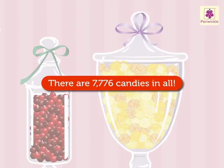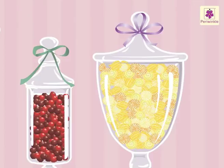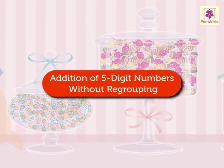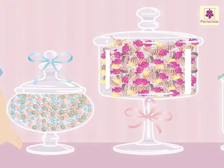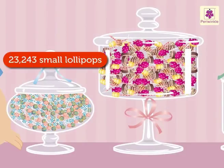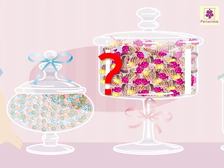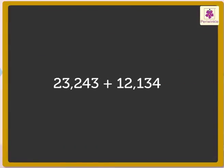Wow! So many yummy candies to eat. Hey, look at those lollipops — they look delicious. Let us learn addition of 5-digit numbers without regrouping with them. There are 23,243 small lollipops and 12,134 big lollipops. How many lollipops are there in all? Here too, we have to add both the numbers to find the total number of lollipops.